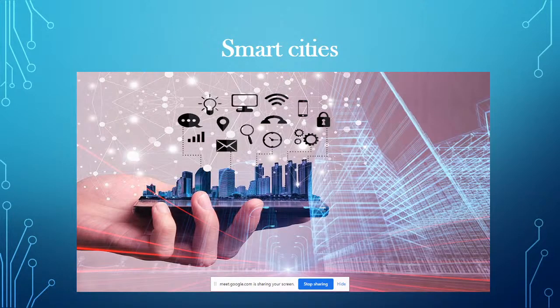Smart cities: building an IoT in a particular area — smart cameras accessible through Wi-Fi, communication from one home to another home, controlling home appliances, and controlling smart street lights through Wi-Fi.